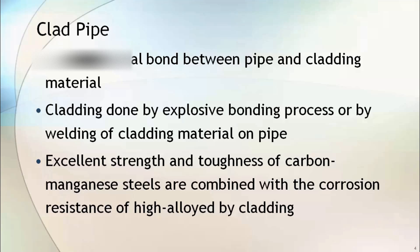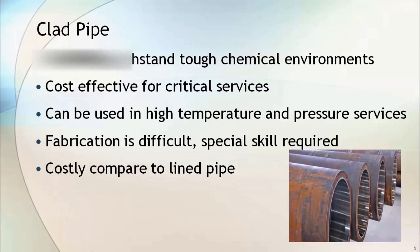High-strength carbon steel materials are clad with high corrosion-resistance metal to achieve cost benefits. Clad carbon steel can withstand tough chemical environments, and clad pipe can be used in high temperature and pressure services.